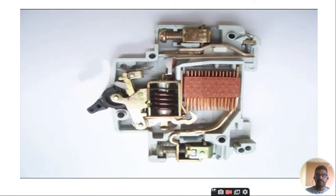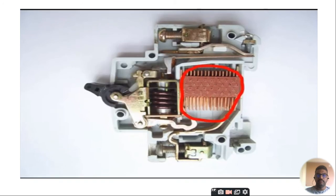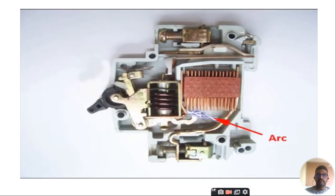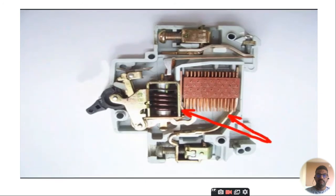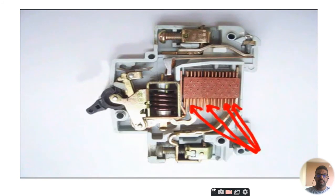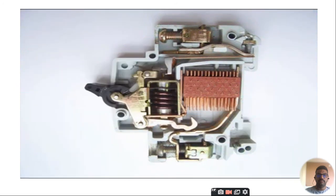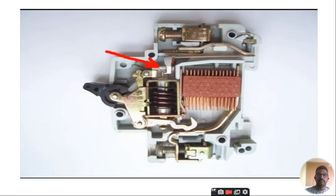A miniature circuit breaker is always provided with arc splitters. During operation of moving and fixed contact, there may be high chance of arc. This arc goes up through the arc runner and enters into arc splitters and is finally quenched. When we switch on an MCB, we actually reset the displaced operating latch to its previous on position. Thank you.